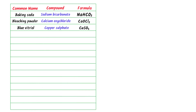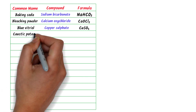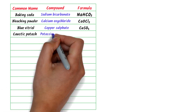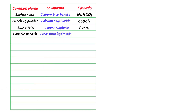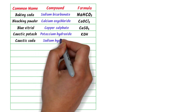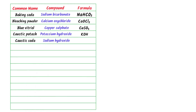The fourth is caustic potash — it is potassium hydroxide and its chemical formula is KOH. The fifth is caustic soda — it is sodium hydroxide and its chemical formula is NaOH.